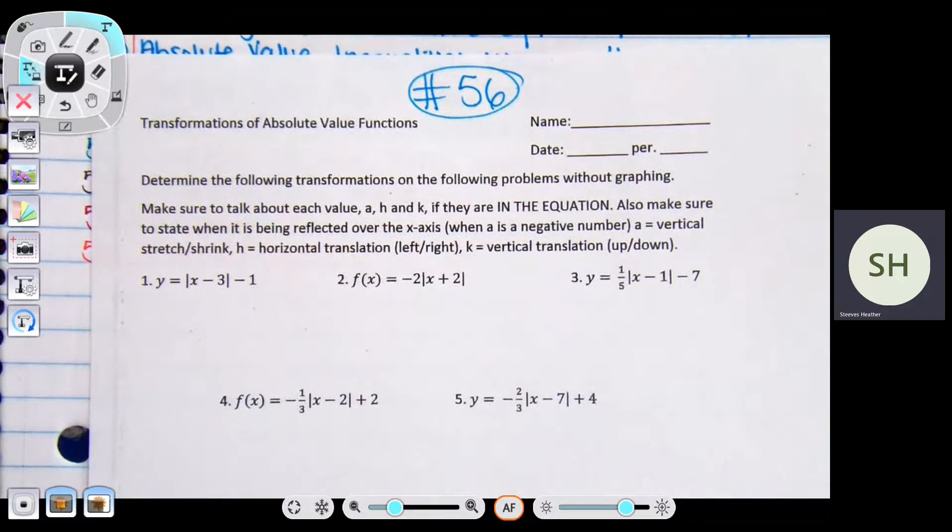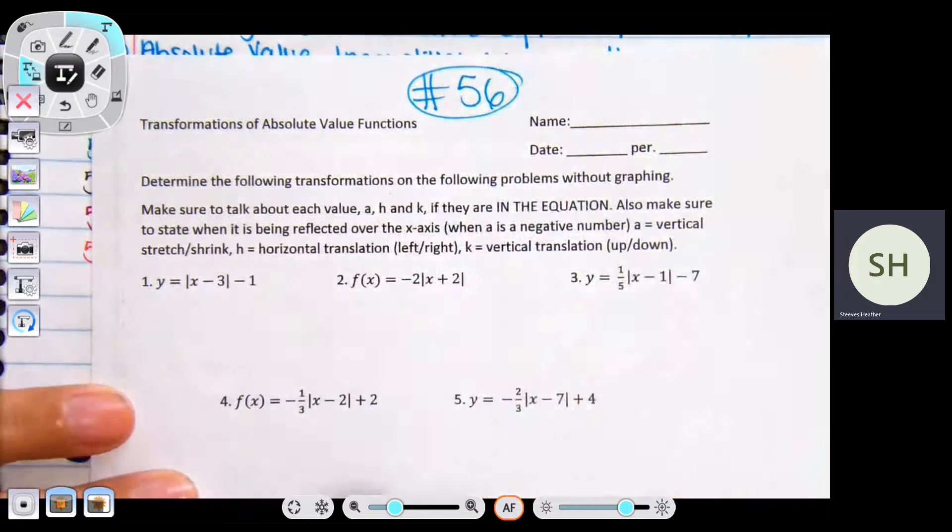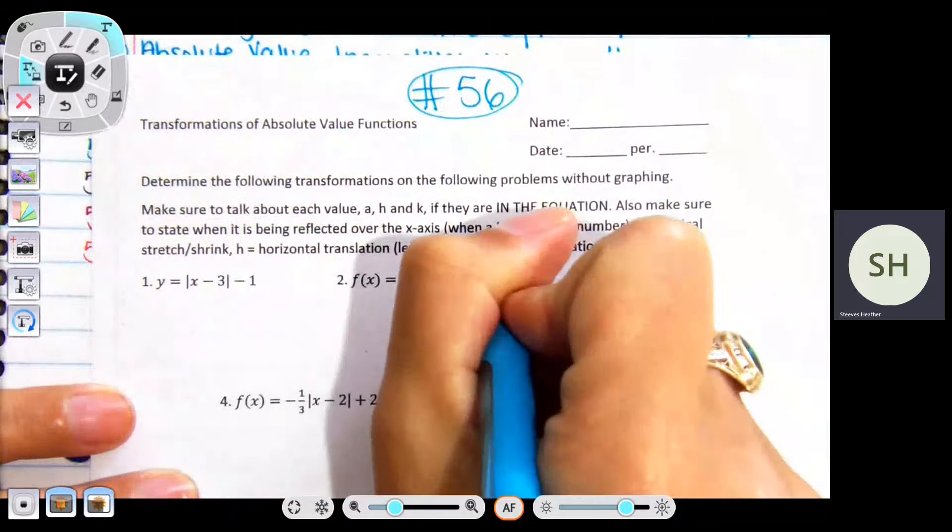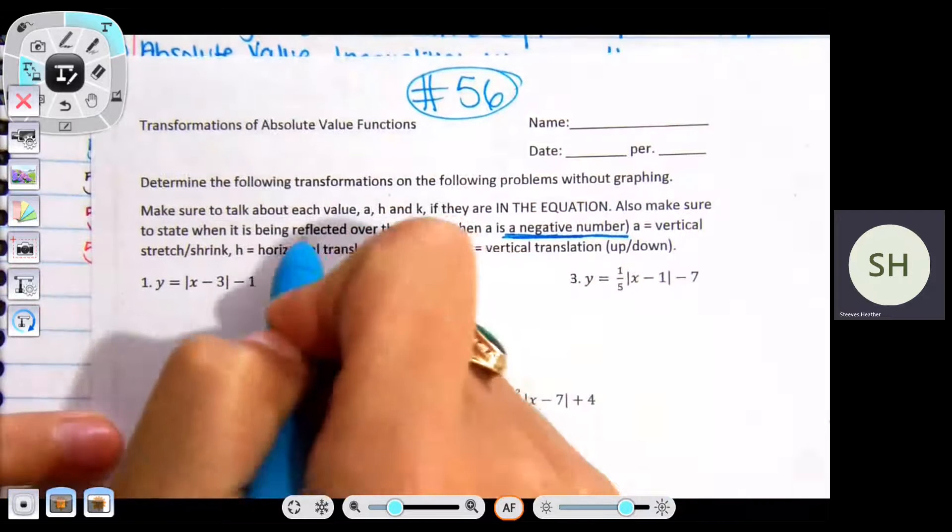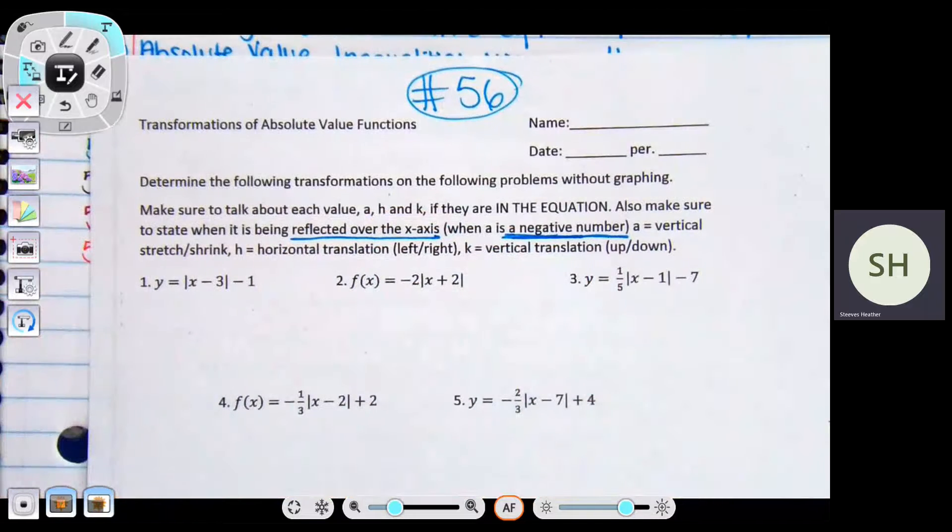You have three values: a, h, and k. What does k tell me? Down or up, right? If k is positive, I'm going up. If it's negative, I'm going down. What's h tell me? If you're going left or right. A is the weirdo. It tells me it's like your rate of change, kind of like your slope. Specifically when a is negative, that means it's being reflected over the x-axis.